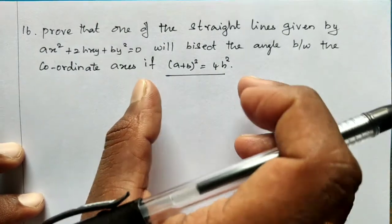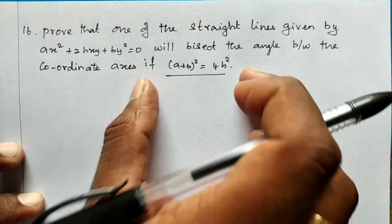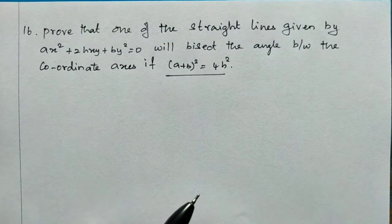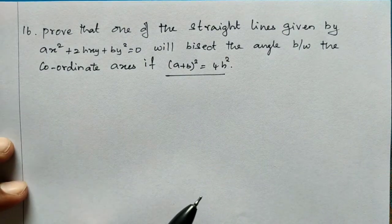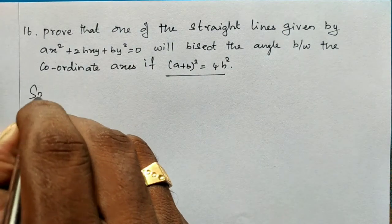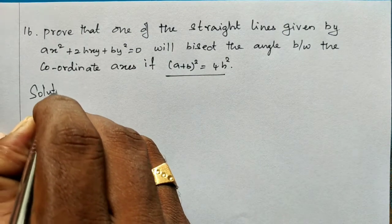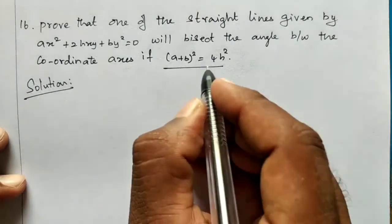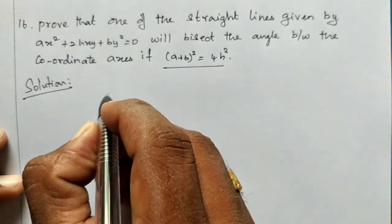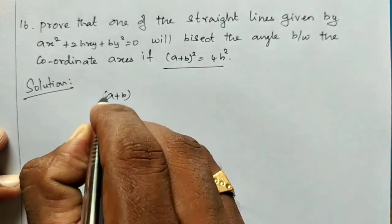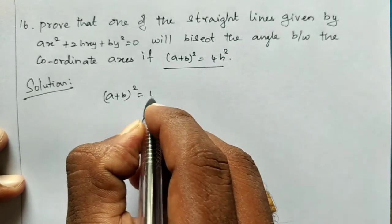We will see the two models. Just listen. If the condition is (A + B)² = 4H².